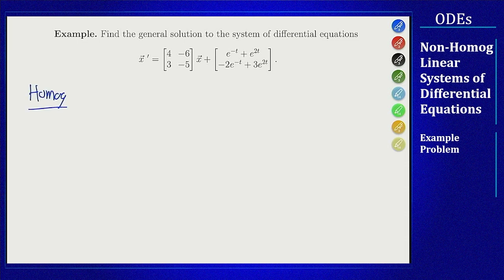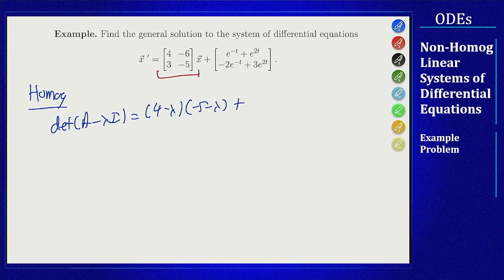The homogeneous part means we're just looking at the coefficient matrix. The eigenvalues can be found by solving (4 - λ)(-5 - λ) + 18 = 0, which gives λ² + λ - 2 = (λ + 2)(λ - 1). So the eigenvalues are λ = 1 and λ = -2.